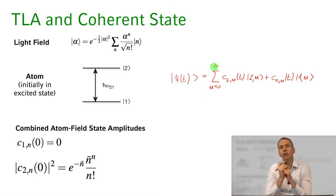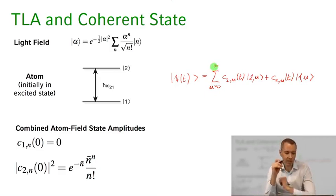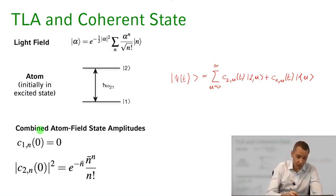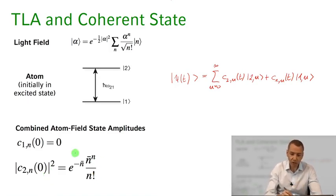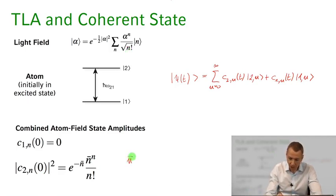So let's consider an initial condition where we start out with the coherent state and the atom being in the excited state, so the ground state population is 0. C1,n at time t equals 0 is 0, and C2,n at time t equals 0 — the probability distribution for that — is just going to be the Poissonian probability distribution of our coherent state, with n-bar being norm alpha squared.